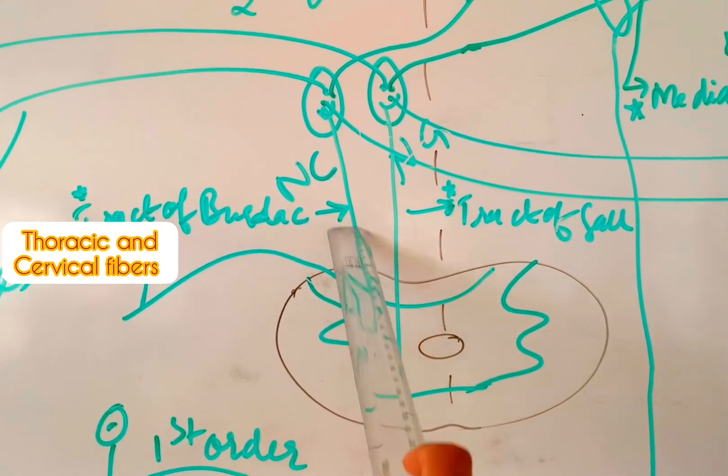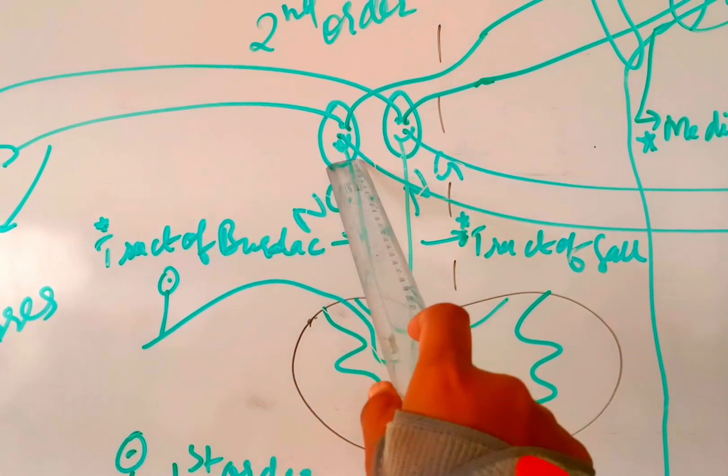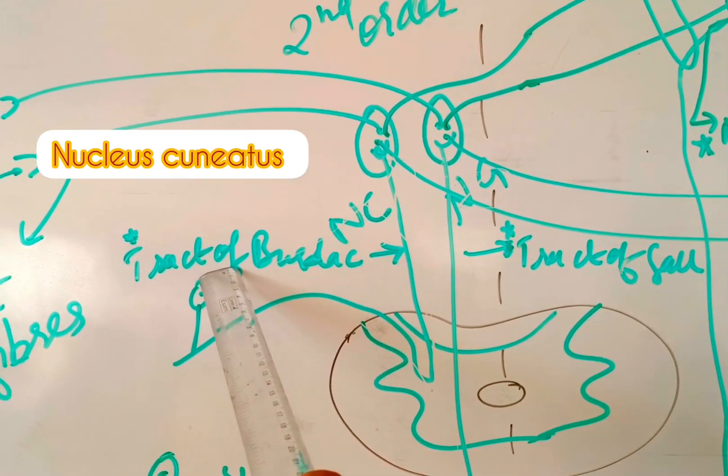Similarly, fibers from the thoracic and cervical area also ascend upwards and synapse with nucleus cuneatus, and the name of the tract is tract of Burdach.